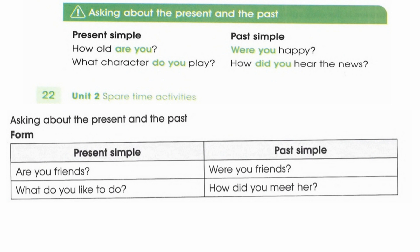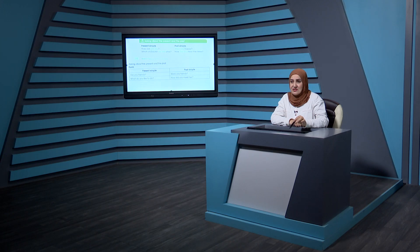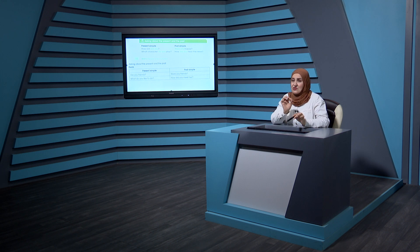Now we move to the grammar section: Asking about the present and the past. This material is also explained at the end of the student's book. In present simple: 'How old are you?' — 'are' indicates present. In past: 'Were you happy?' — 'were' indicates past. 'What character do you play?' — 'do' indicates present. 'How did you hear the news?' — 'did' indicates past. In all these cases, the auxiliary verb comes before the subject.